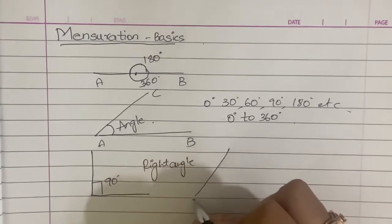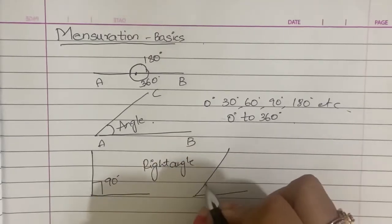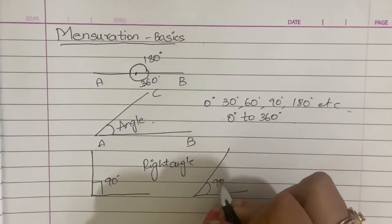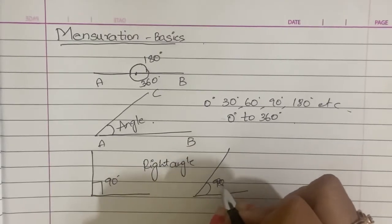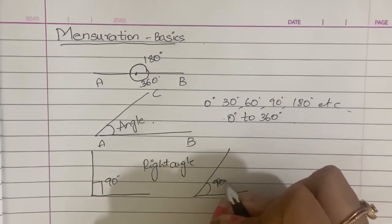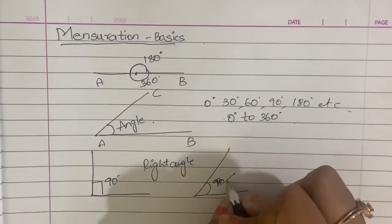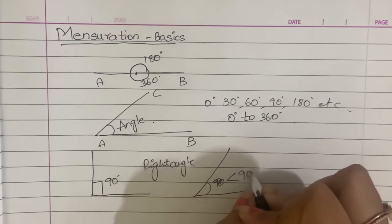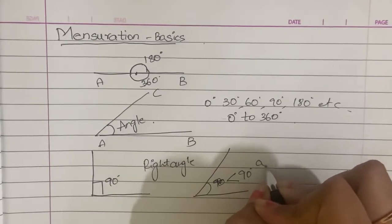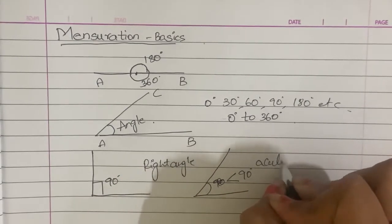Here there are two lines and two angles. This angle is less than 90 degrees — that is the acute angle.